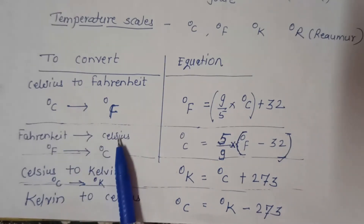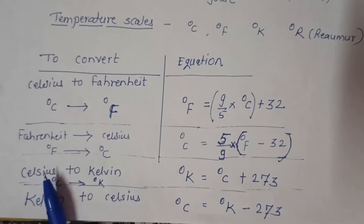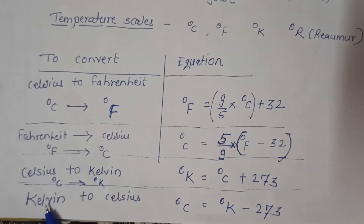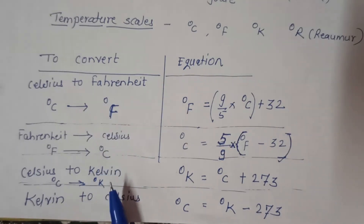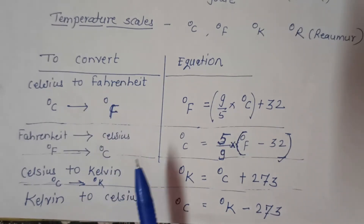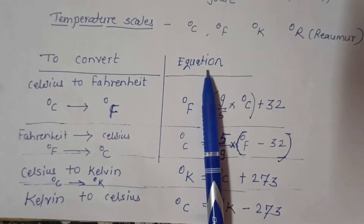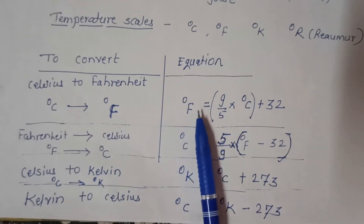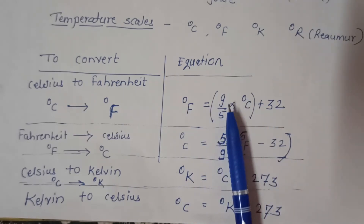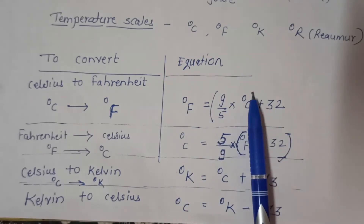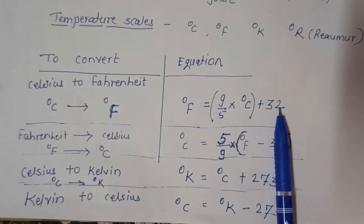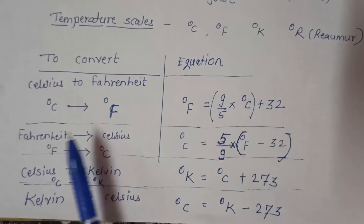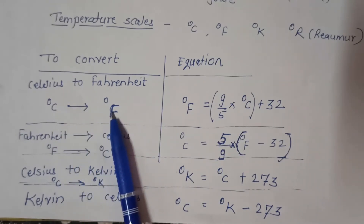To convert temperature scales, the equation for converting degree Celsius to degree Fahrenheit is: degree Fahrenheit is equal to 9 upon 5 into degree Celsius plus 32. This is the conversion of degree Celsius into degree Fahrenheit.